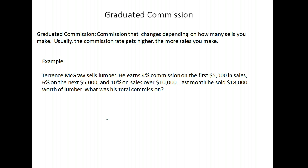Let's talk about a different kind of commission called graduated commission. The commission you're paid changes depending on how many sales you make, so the more you sell, the higher your commission rate goes. For example, Terrence McGraw sells lumber. He earns 4% commission for the first $5,000 in sales, 6% on the next $5,000, and 10% on anything over $10,000.